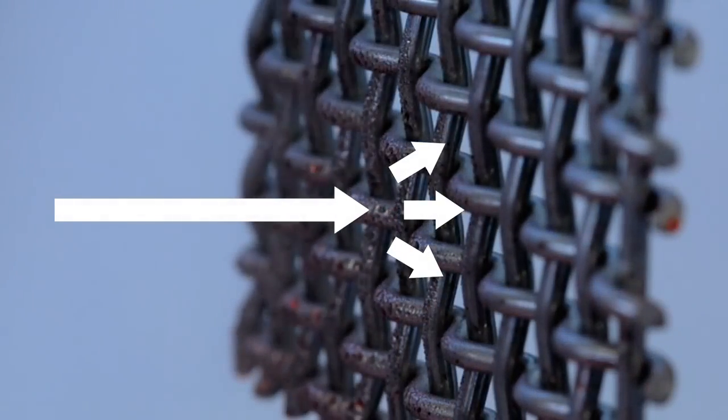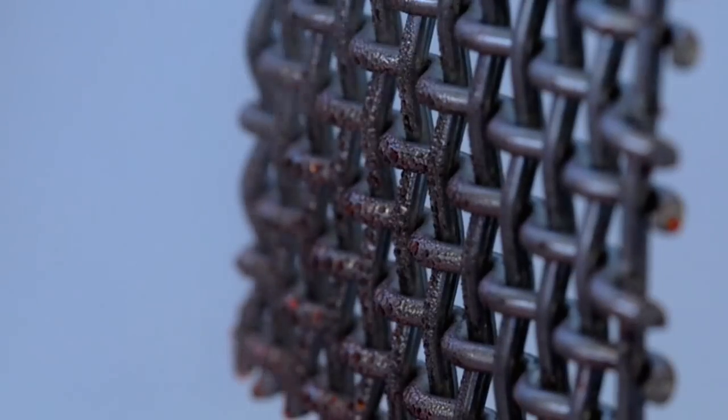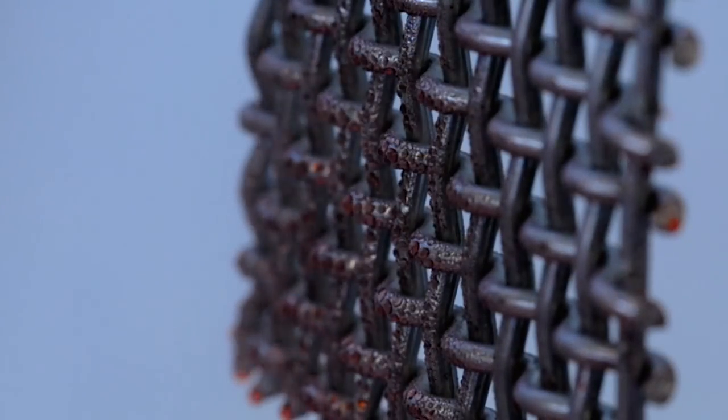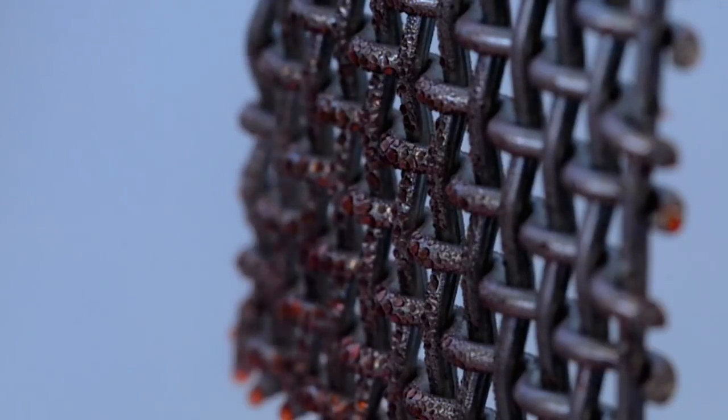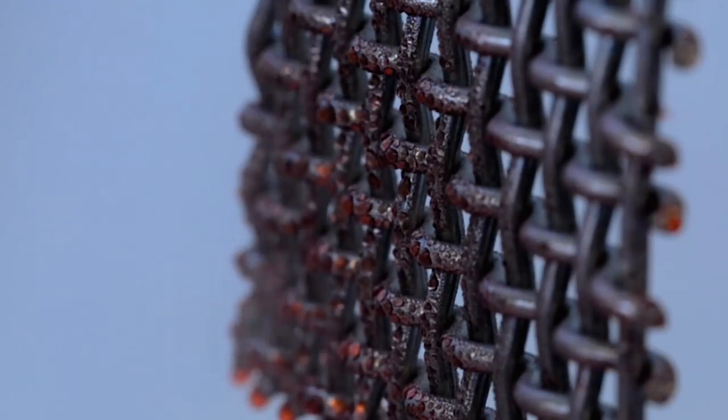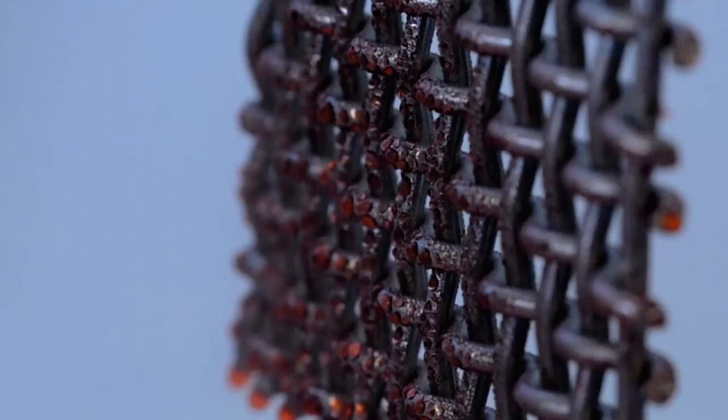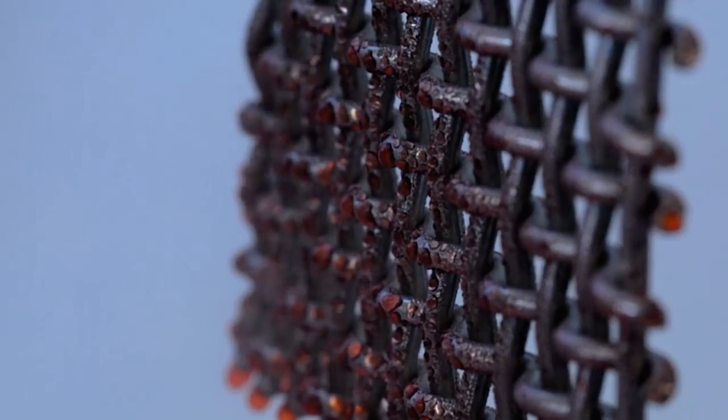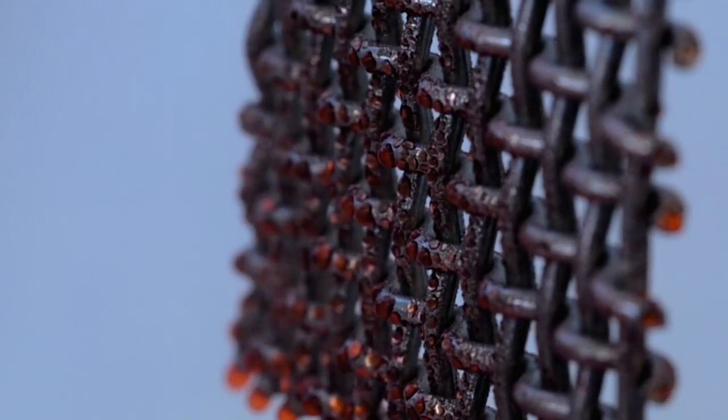The researchers found once they zap the fog with a beam of electrically charged particles known as ions, the opposite effect happens. Not only do all the droplets that are in the path of the wires land on them, but even droplets that were aiming for the holes in the mesh get pulled toward the wires due to the charge.